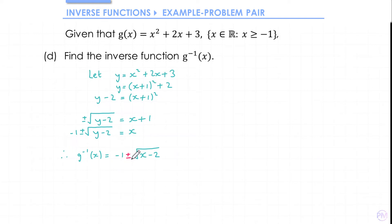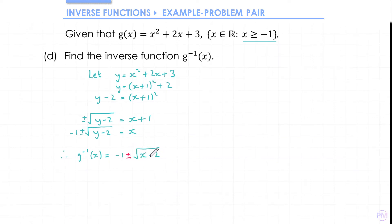So what we need to do next is decide: do we want the plus or do we want the minus? Conveniently, the range of the inverse function is the same as the domain of the original function, so we need to get values out of this function that are bigger than or equal to -1. Square roots will always give answers that are zero or greater, so if we use the minus sign we'd be doing -1 minus something, which is clearly going to give us an answer less than -1. So we need a plus. Let's add a domain on as well — and there is our inverse function.